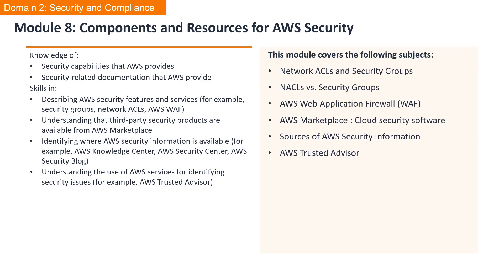Welcome to Module 8: Components and Resources for AWS Security. In this module, we will cover these subjects: Network ACLs and security groups, the differences between network ACLs and security groups, AWS Web Application Firewall or WAF, AWS Marketplace to find third-party cloud security software, sources of AWS security information, and AWS Trusted Advisor. Let's get started.